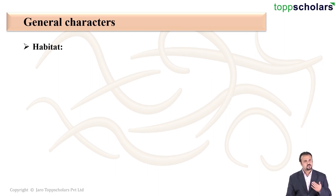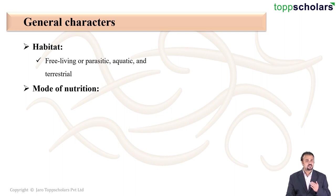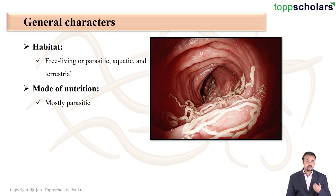These organisms can be free-living or parasitic. They can be found in aquatic as well as terrestrial environments. However, most of the roundworms known to humans are mostly parasitic.